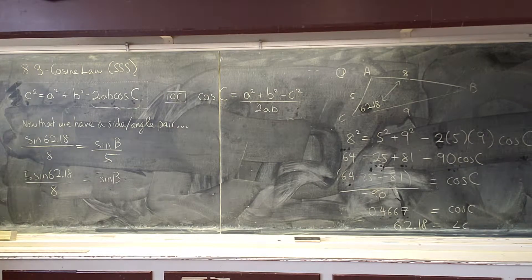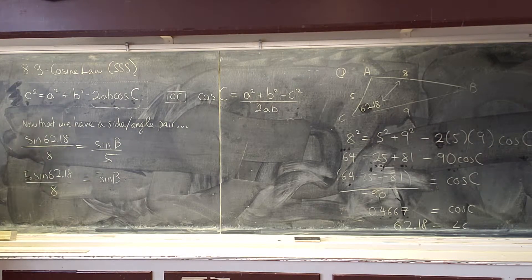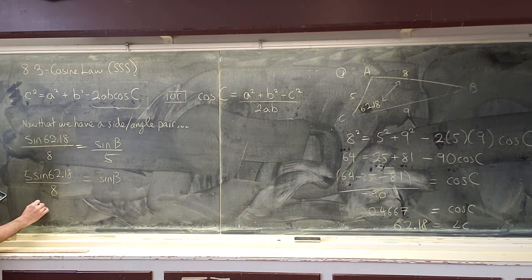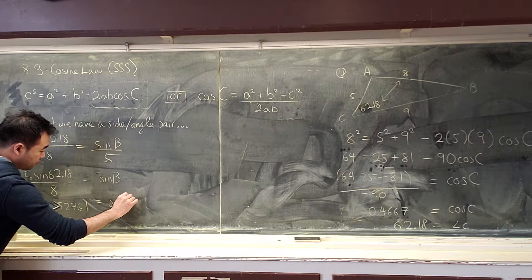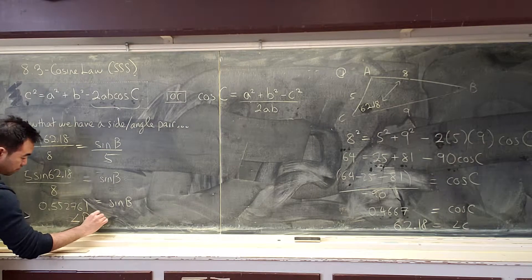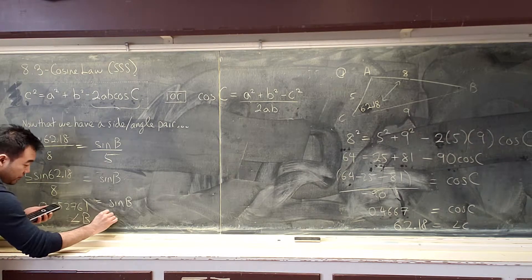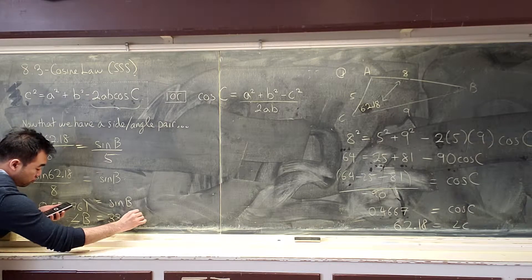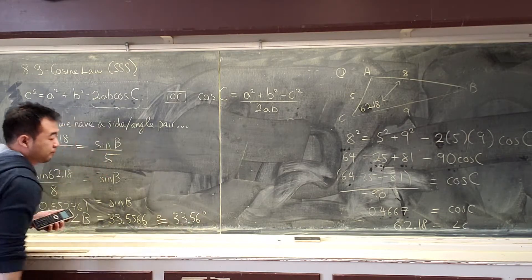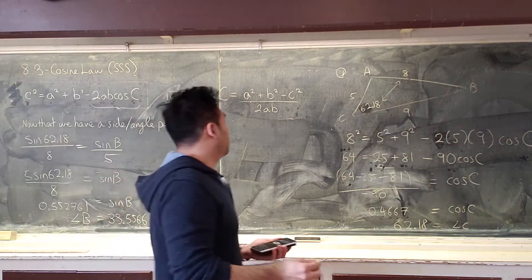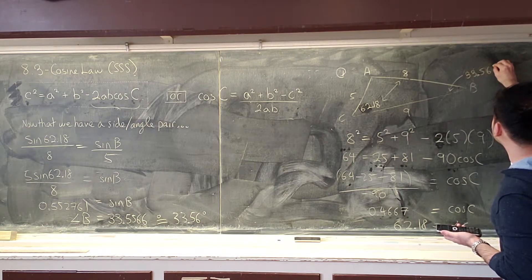Someone's going to have to do that for me. Five sine 62.18 divided by 8. Is everyone following? If you have something else, please let me know. Okay. So, sine of B is 33.56 degrees.